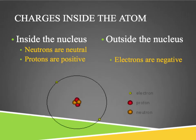Just to review: inside the nucleus of an atom we have neutrons and protons that make up the nucleus. The charge for a neutron is neutral, protons have a positive charge, and then the electrons circle the nucleus and they have a negative charge.